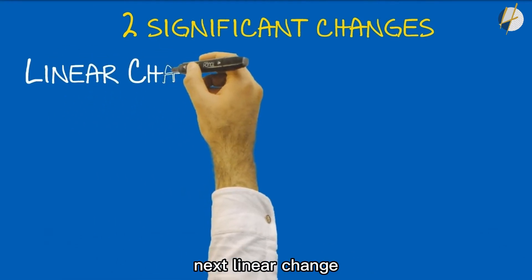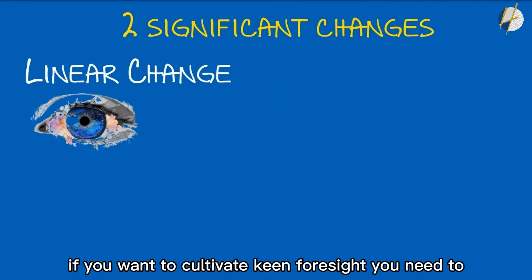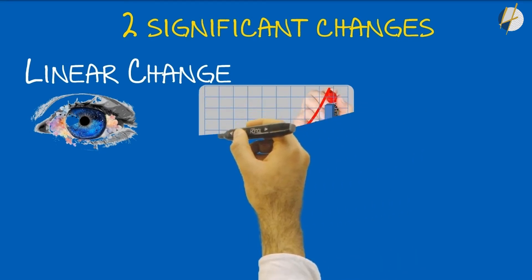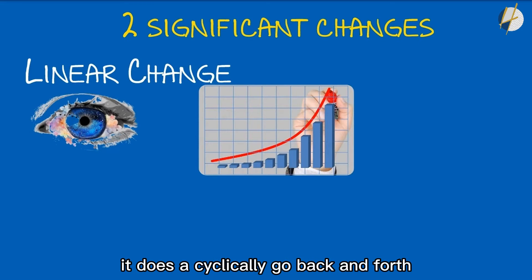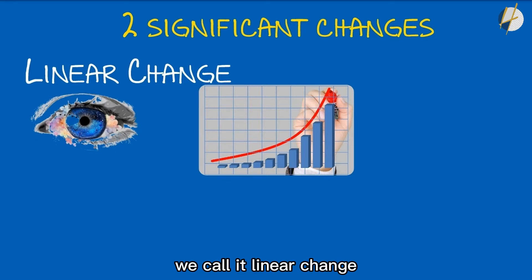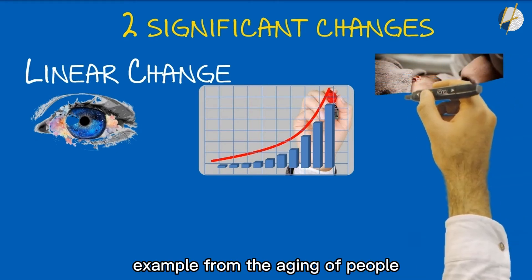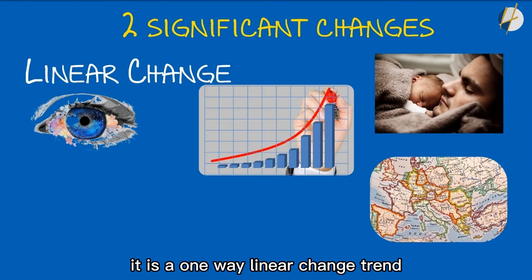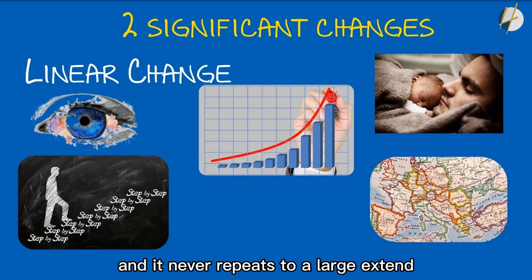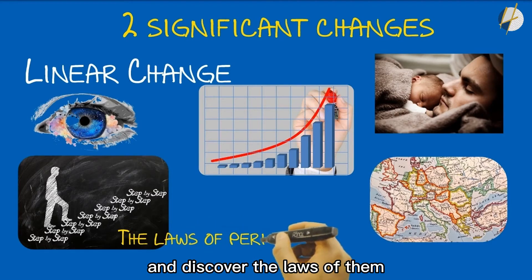Next: linear change. If you want to cultivate keen foresight, you need to understand another kind of certainty — a kind of change that is completely different from periodic changes. This mode of change is not cyclical; it doesn't go back and forth, but only develops in a single direction. We call it linear change. From the aging of people to the matters of a country, it is a one-way linear change that never repeats. To a large extent, foresight is about recognizing linear changes and discovering their laws, alongside periodic changes.